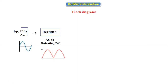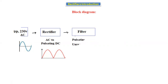We then give this pulsating DC to the filters. There are many types of filters: inductor filter, capacitor filter, and inductor-capacitor filter. When pulsating DC is given to the filter, the output is unregulated DC. However, with filters we get approximately 95 percent DC — not 100 percent pure DC.